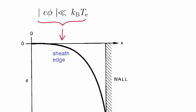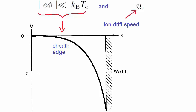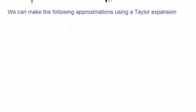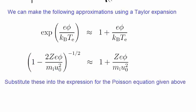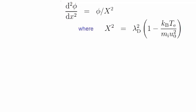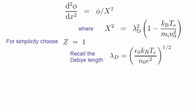And we also make the assumption that in this region, the ion drift speed, Ui, is much greater than the ion thermal speed. We then use the Taylor expansion to make the following approximations. We expand this term to first order, and we expand this term to first order as well. If we now substitute these expressions back into the Poisson equation above, we obtain the following, where x squared is given by this expression. For simplicity we've chosen z to be 1. Note that λd is the Debye length given by this expression.